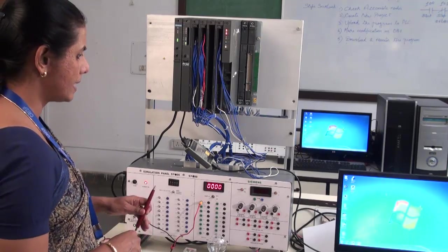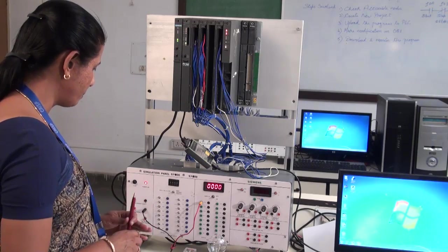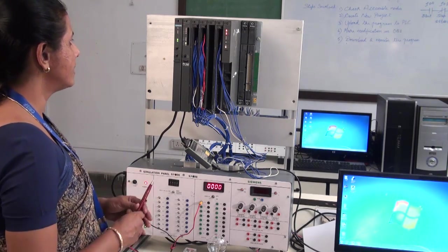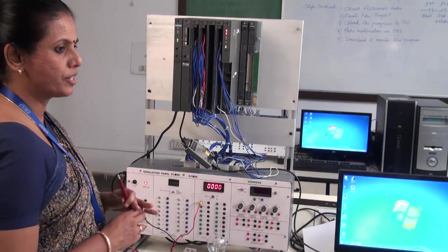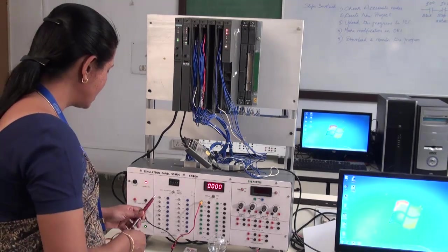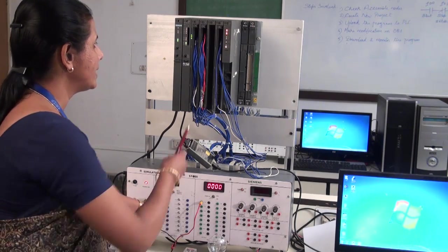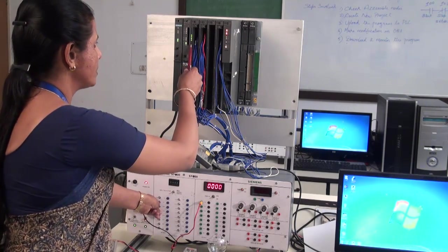The problem in this task is this switch is not working properly. When I am making it on and off the status is not visible in my digital input card. Whereas all other switches are working properly, when I am making it on you can see the status of all these switches here.